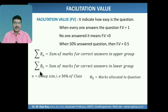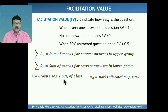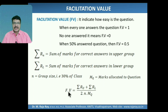We have to divide the entire class into three groups. The upper group size and lower group size is called n, the group size. Group size is equal to 30% of the total class strength, obtained from Gaussian distribution. Marks allocated to each question we will indicate with MQ. Sigma RU means sum of marks for correct answers in the upper group. Sigma RL is sum of marks for correct answers in the lower group. Facilitation value is equal to Sigma RU plus Sigma RL divided by 2N into MQ.